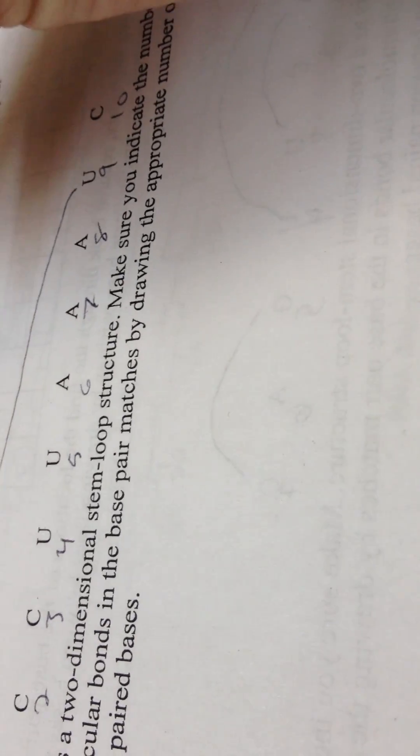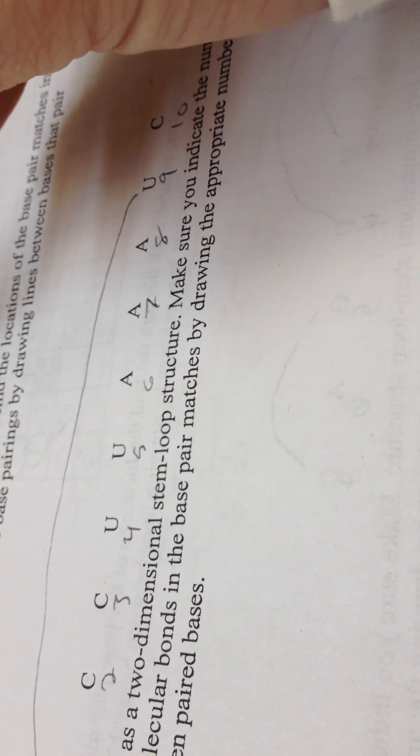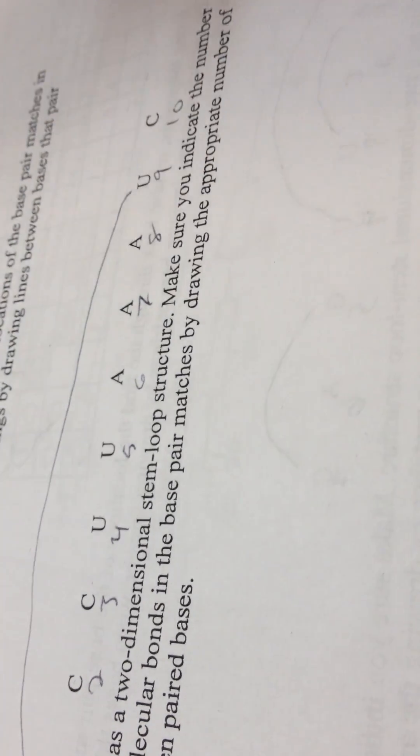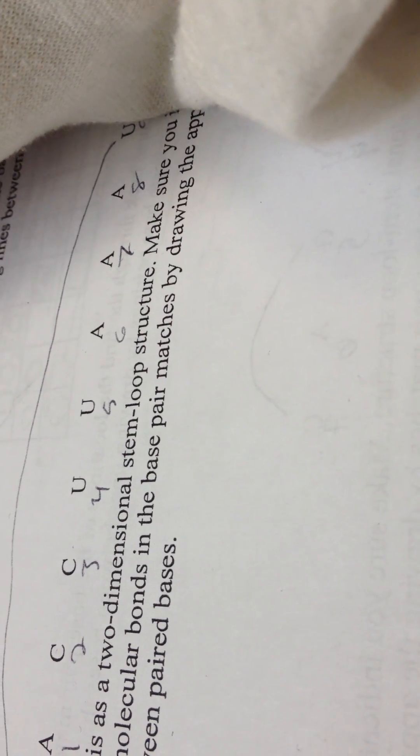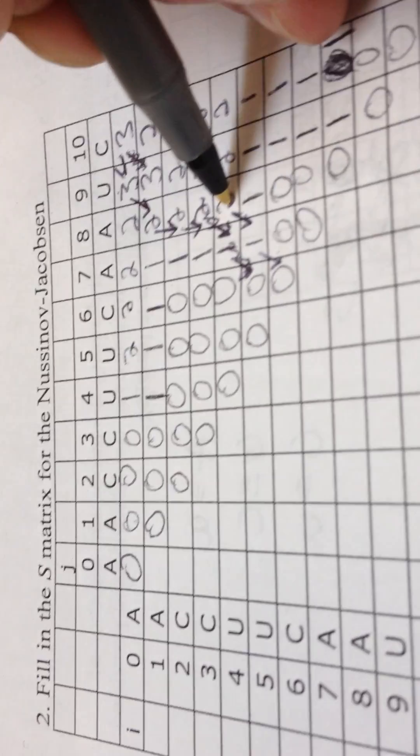We see that eight and three—oh, that must be a mistake. This is A to U, it should be here, not up here. See, we just corrected ourselves, because this was an A to C but it's supposed to be A to U. So we have eight and four matching.